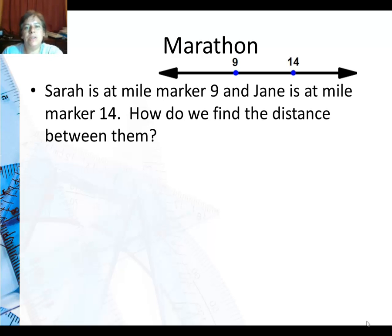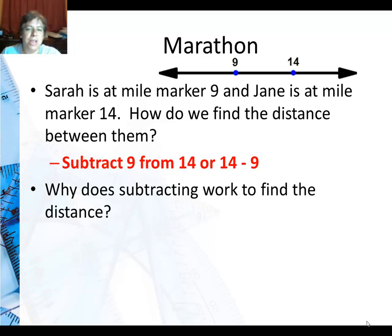So first of all, just take an example. Sarah is at mile marker 9, she's running a marathon, and Jane is at mile marker 14. How do we find the distance between them? Well you naturally would subtract 9 from 14 or 14-9. One thing to note, notice how I subtract 9 from 14 but it comes after the subtraction sign. Kind of a strange little thing with the English language.